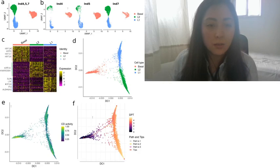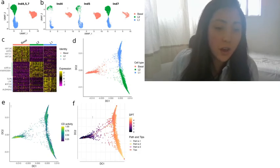Then I applied the diffusion maps technique in Figure D and computed the cell differentiation activity. And as you can see the highest activity levels were located in the basal cluster.